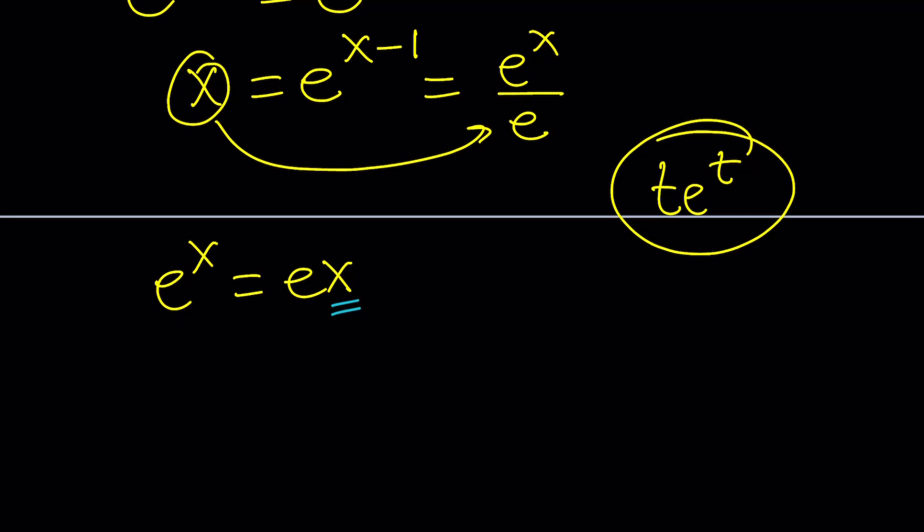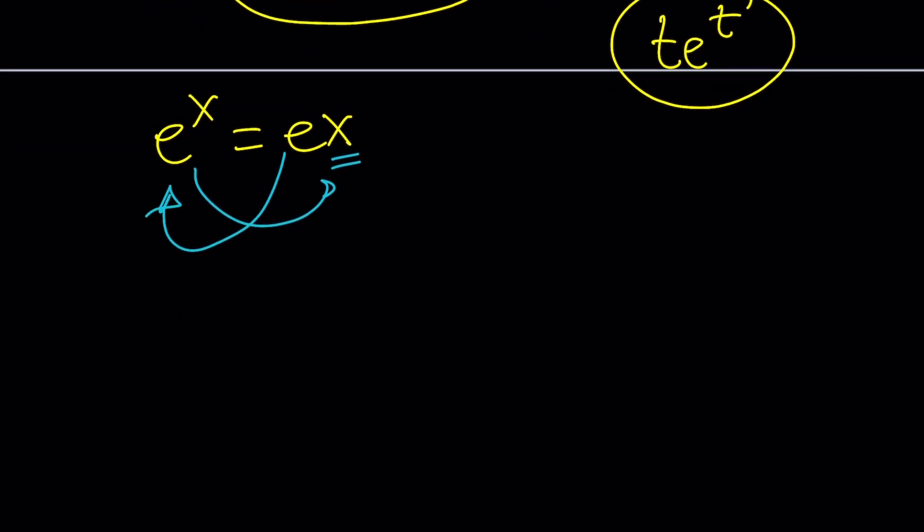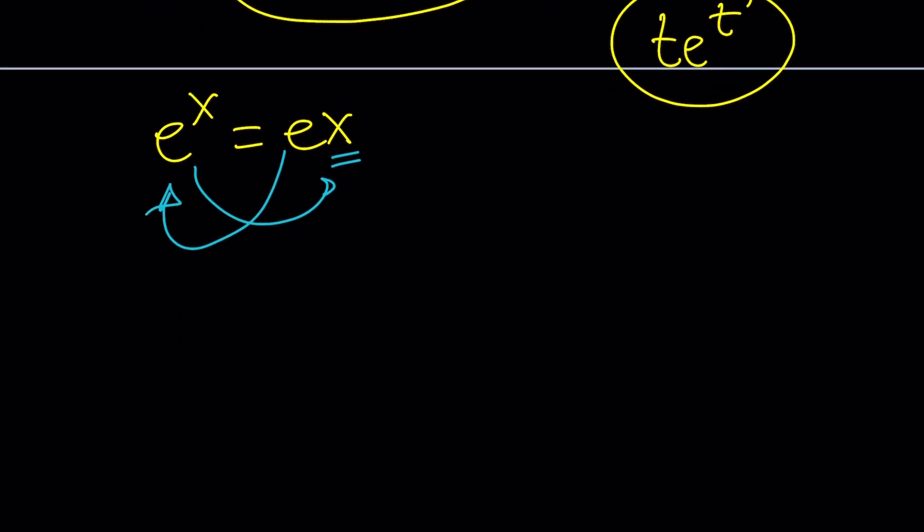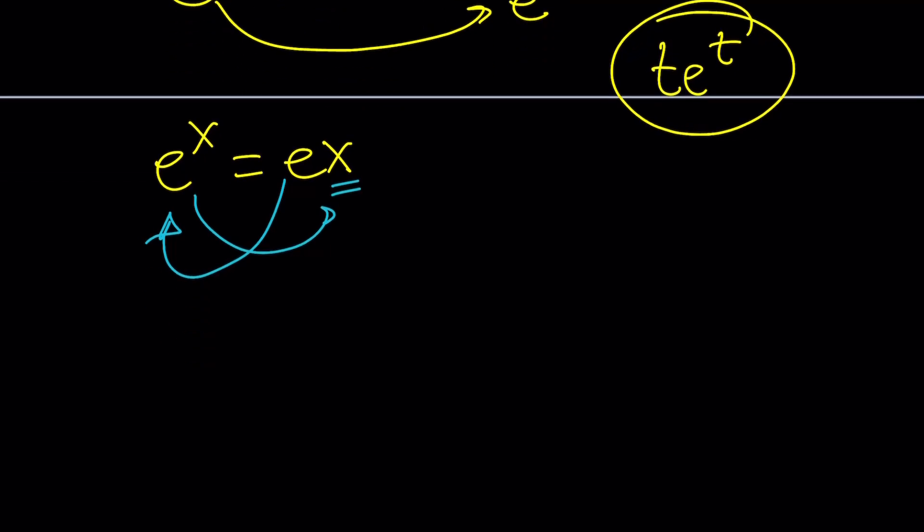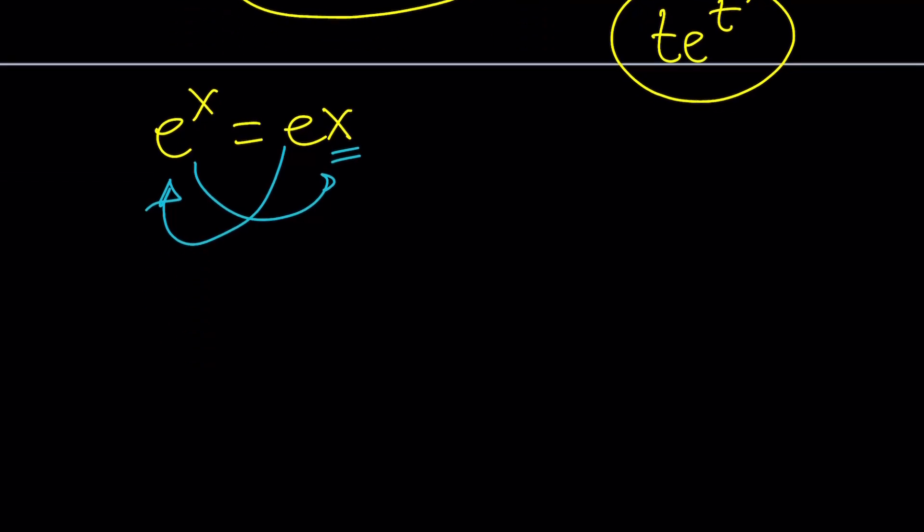So here's what we're going to do. We're going to go ahead and bring this over here by division and put the e on the other side. First of all, I'm going to divide both sides by e to the x. So it's going to be e to the x divided by e to the x equals e x divided by e to the x. And then this is going to be 1.